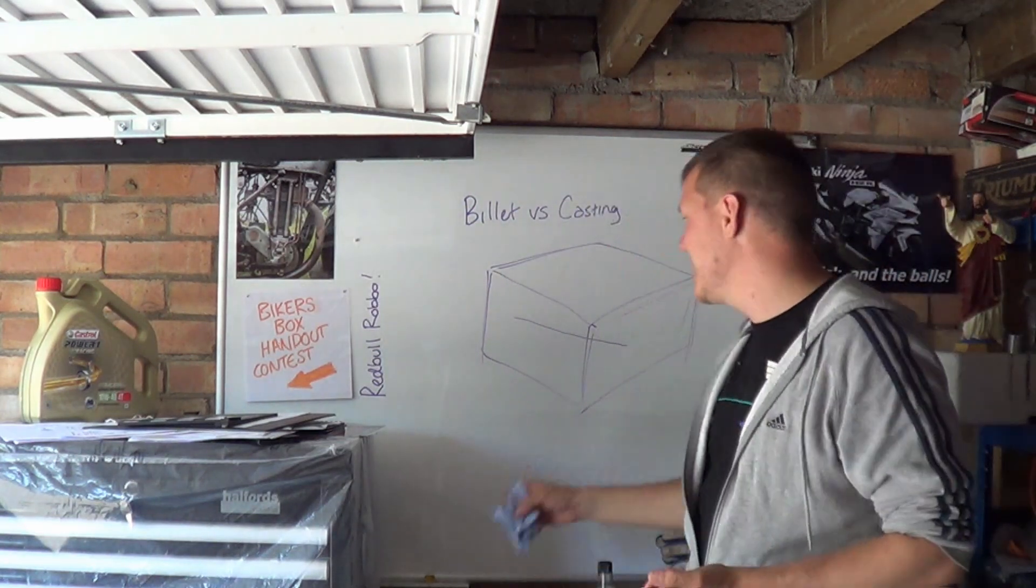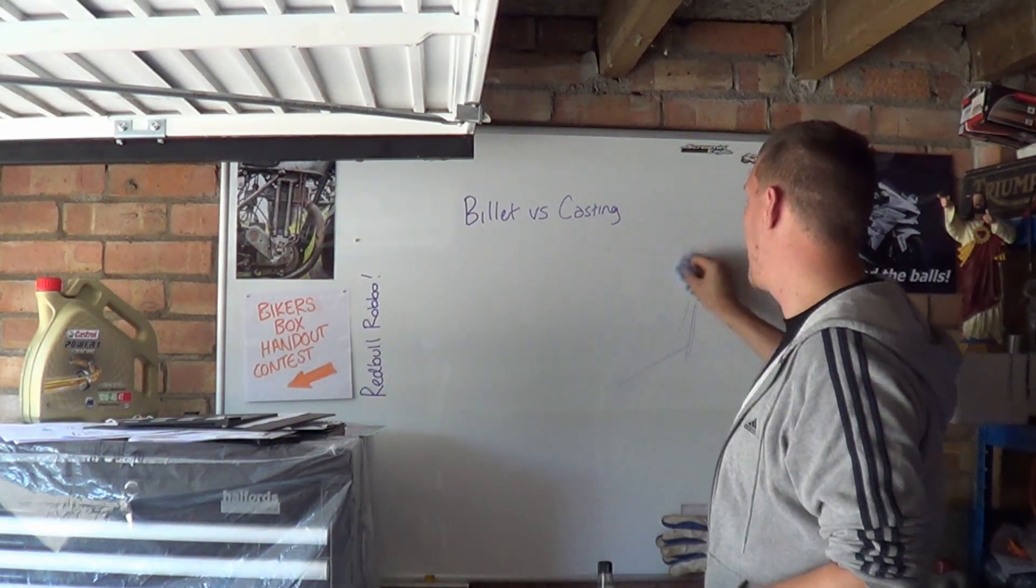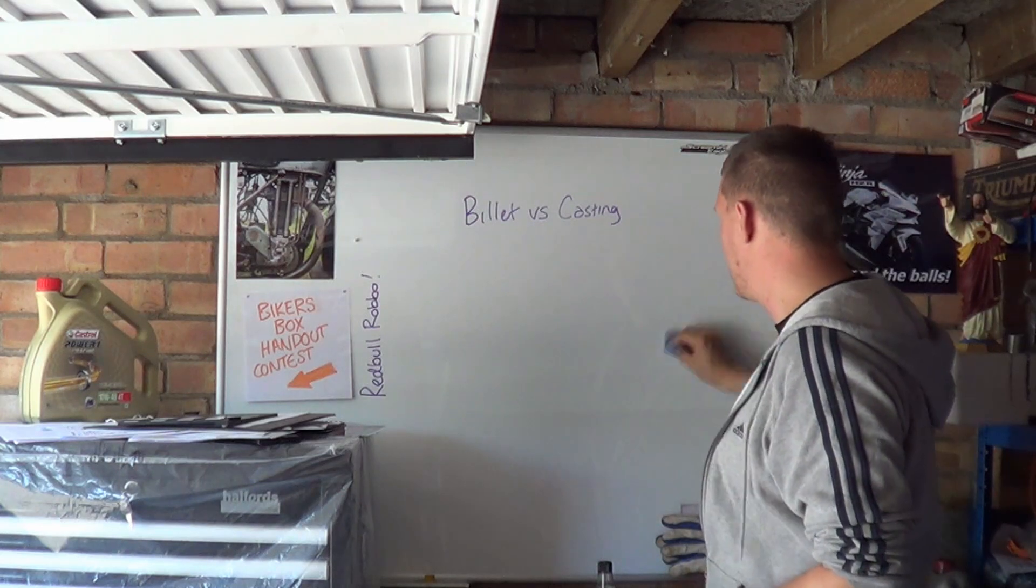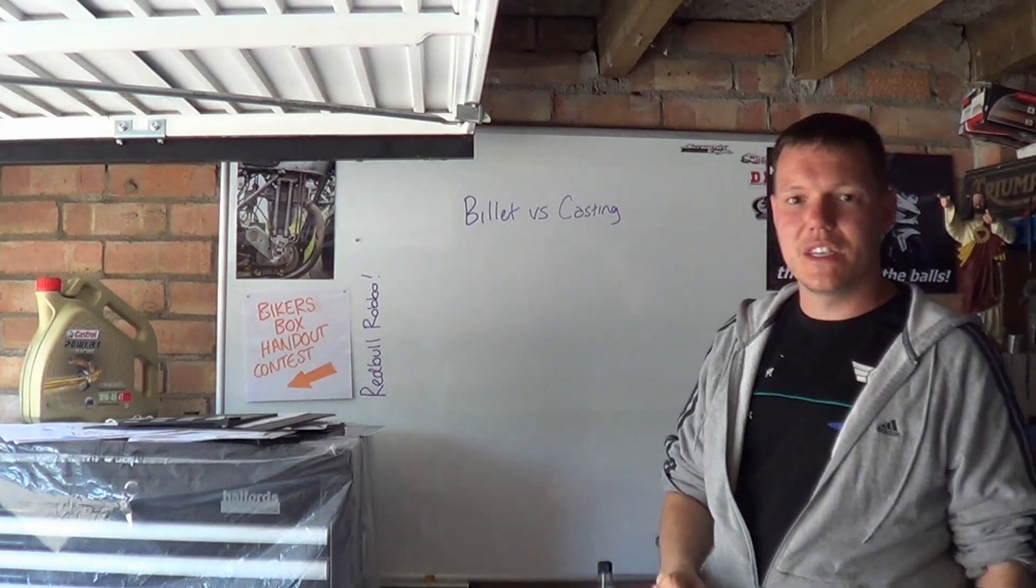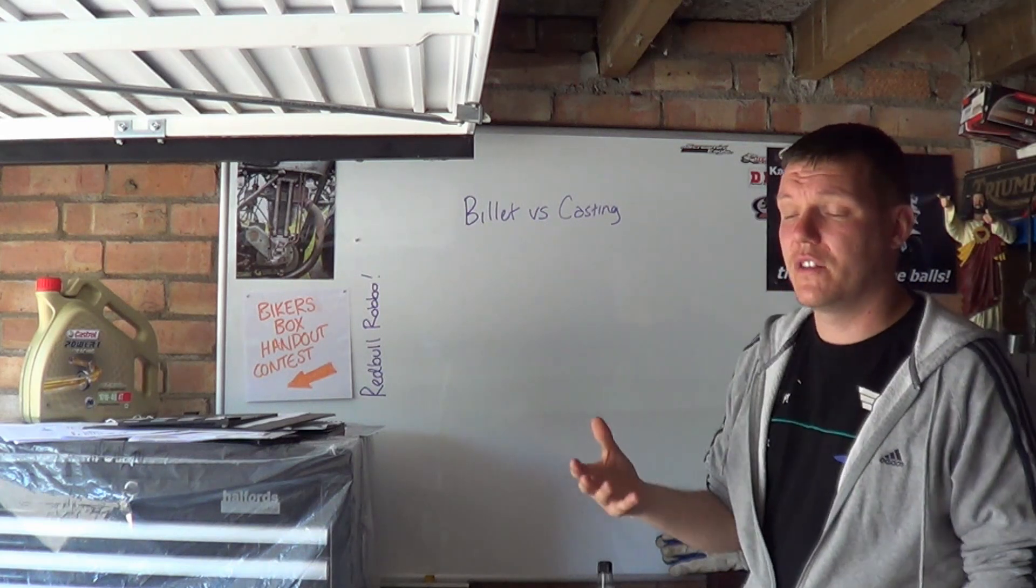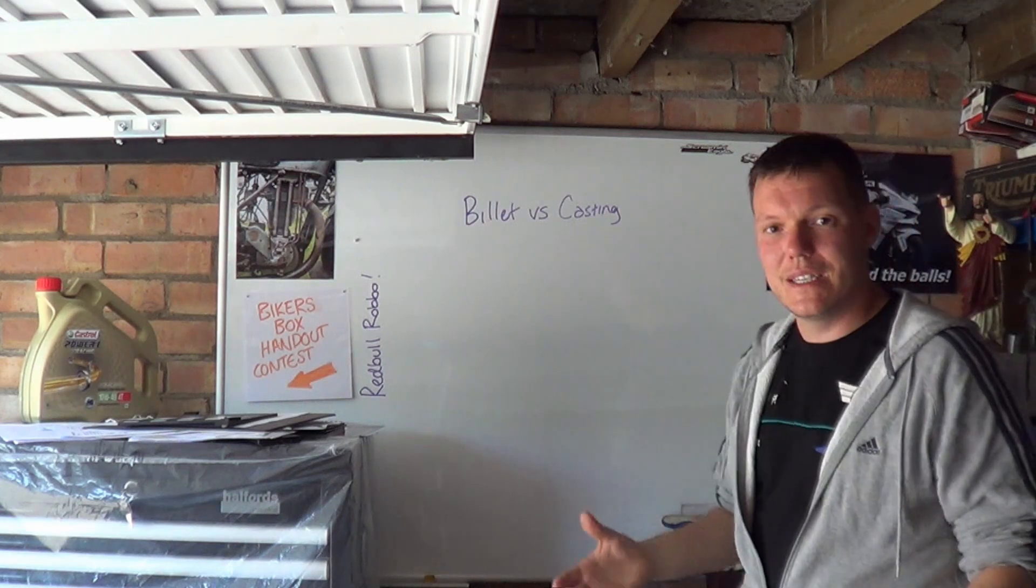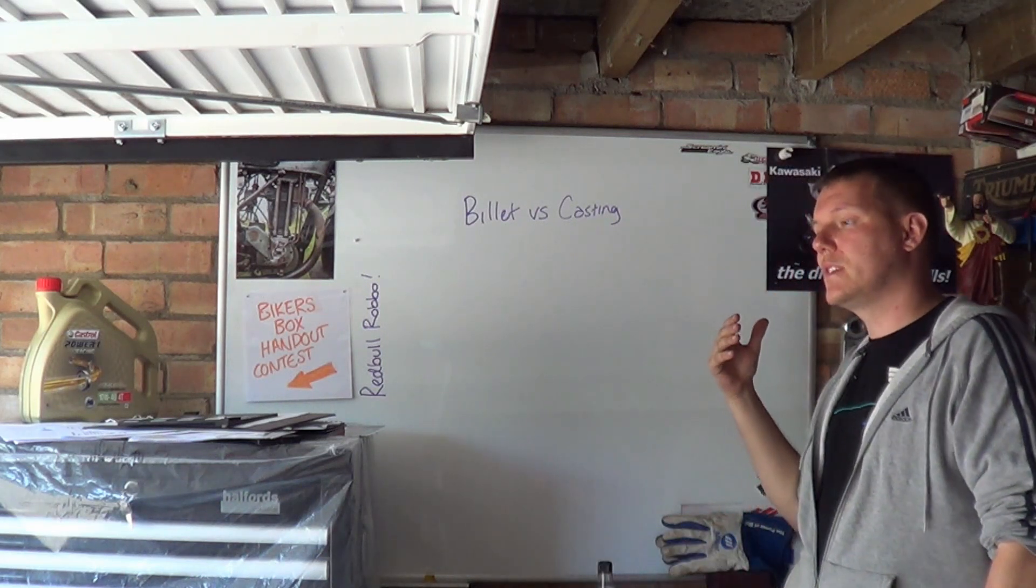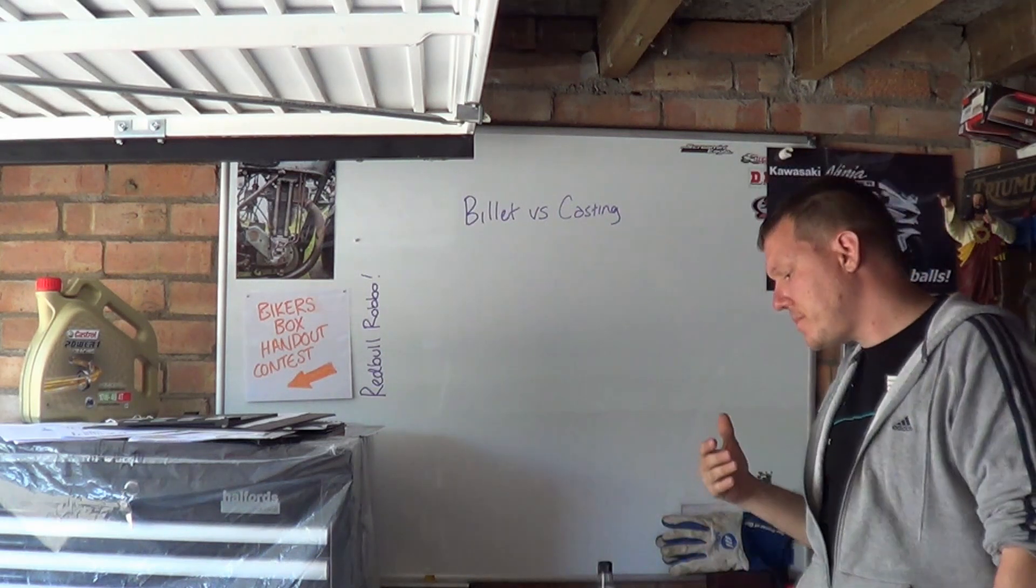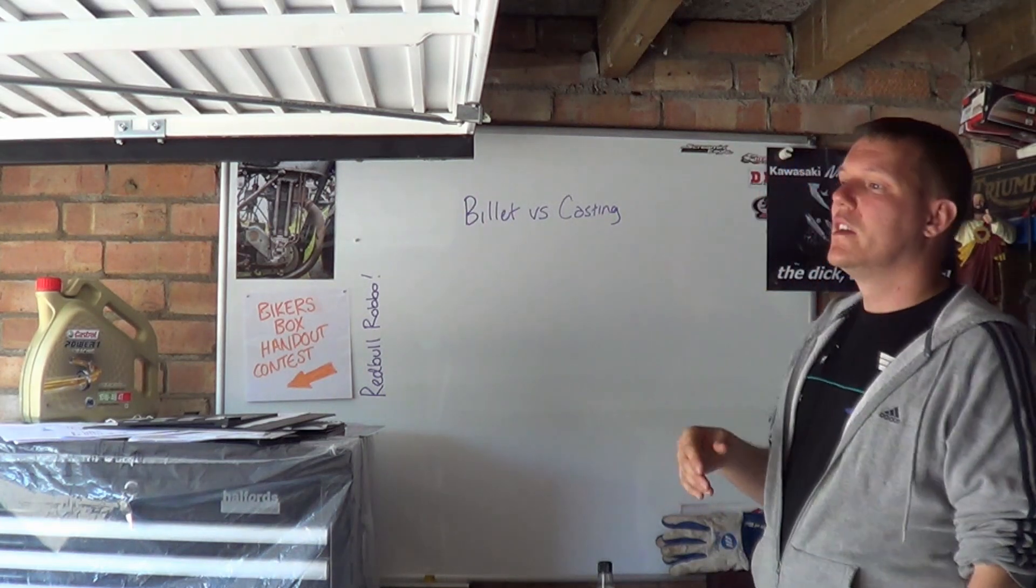Where you do casting, you can get inclusions, you can get voids, you can get hydrogen embrittlement, you can get all sorts of other things and nasties. This is why in top fuel dragster racing, for top fuel they'll only accept billet machined, CNC machined blocks because you are confident that the material is the same all the way through.